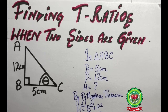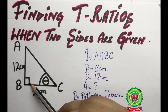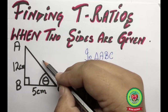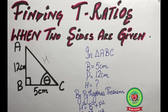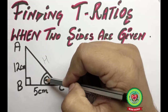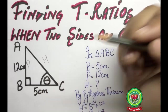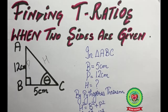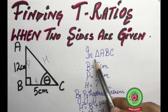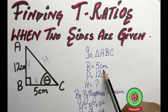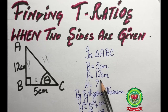As discussed in previous videos, the hypotenuse is the side opposite to 90 degrees. Here AC is opposite to angle B, that is 90 degrees, so AC will be the hypotenuse. The side opposite to the reference angle is the perpendicular — AB is opposite to the reference angle, so AB is the perpendicular. The remaining side BC is the base.